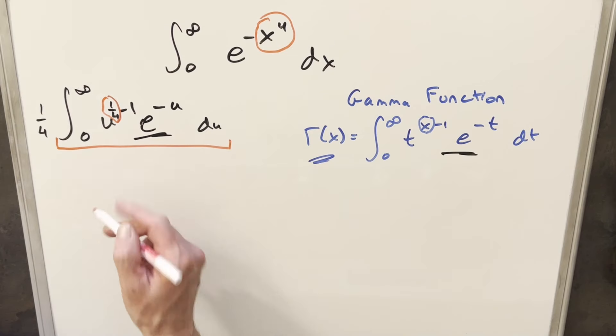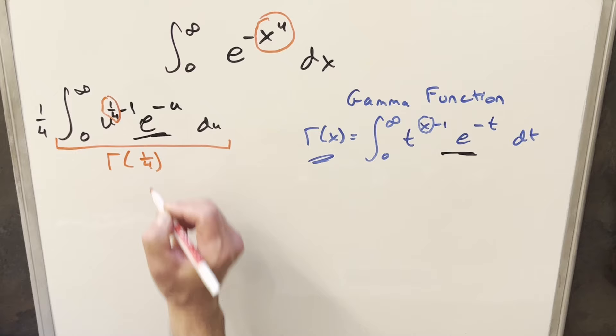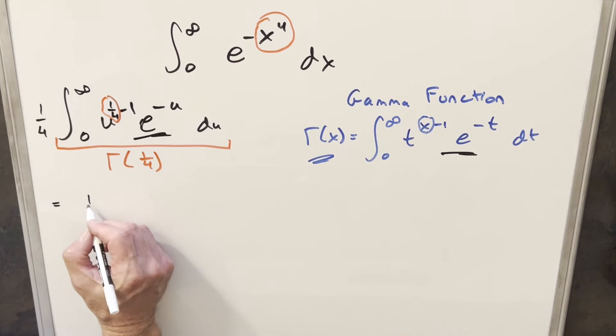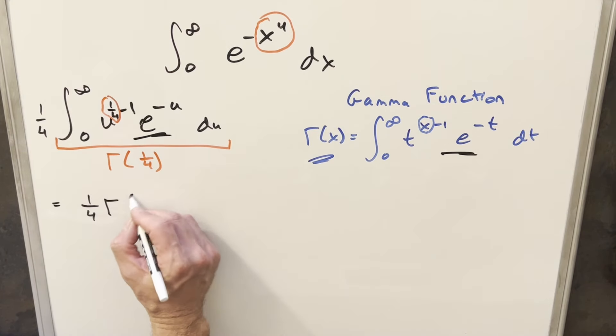So the value of this whole thing, it turns out, is going to be just gamma of 1 over 4. So putting this together, we can write this as 1/4th times gamma of 1/4th.